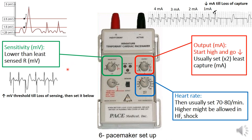To set sensitivity correctly, we increase the sensitivity threshold until we see loss of sensing — the pacemaker no longer detects the patient's heart rate — and we observe inappropriate spikes, such as a spike on the T wave. We then decrease the threshold step by step until we restore the normal sensing pattern of the pacemaker.